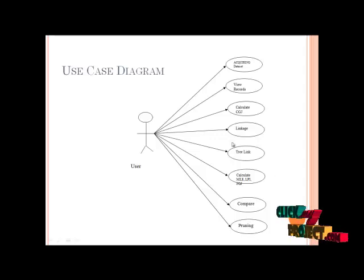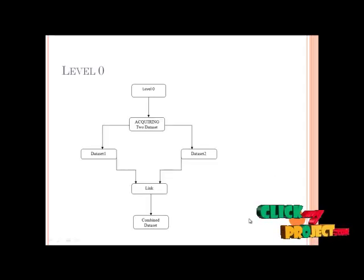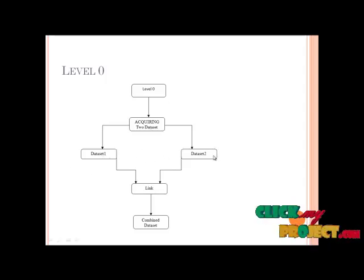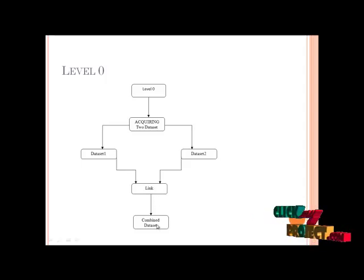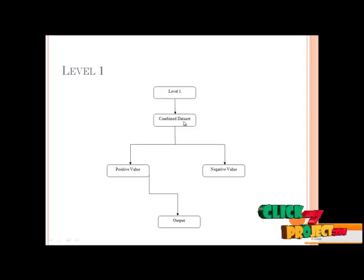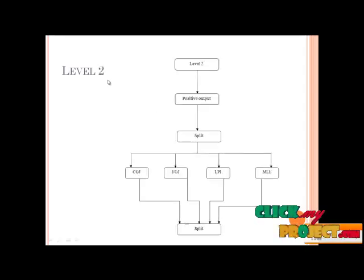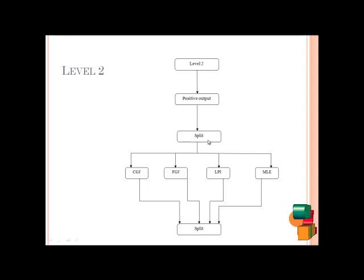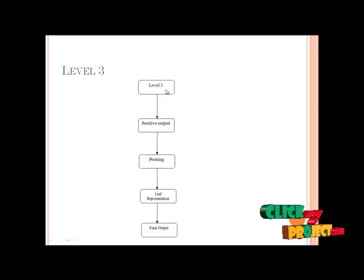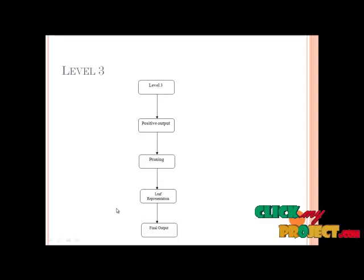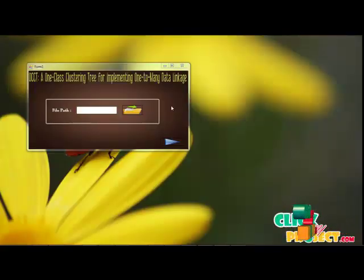This is the use case diagram. The use case starts at the zeroth level. When acquiring data, there are two datasets. Both datasets will be acquired, linked, and combined into one dataset. In the second level, the combined dataset will be separated into positive values and negative values. In the next level, the positive values will be split using four methods. The split output will then be pruned and the leaf node representation will be found.